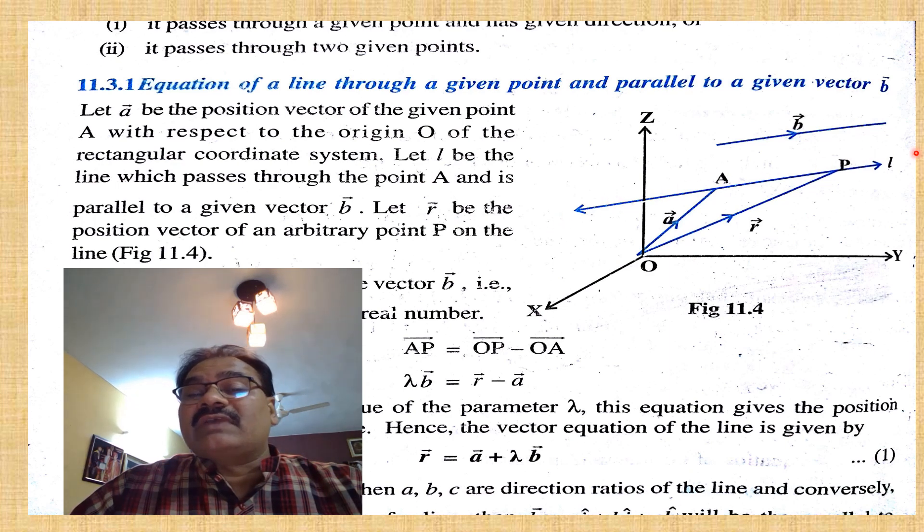Let L be the line which passes through point A and is parallel to a given vector b. Let vector r be the position vector of any arbitrary point P on the line. A and P are both points on this line L.